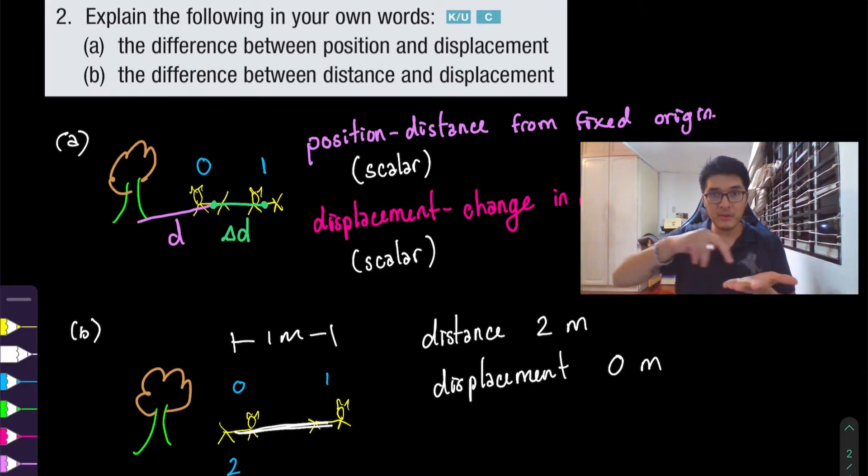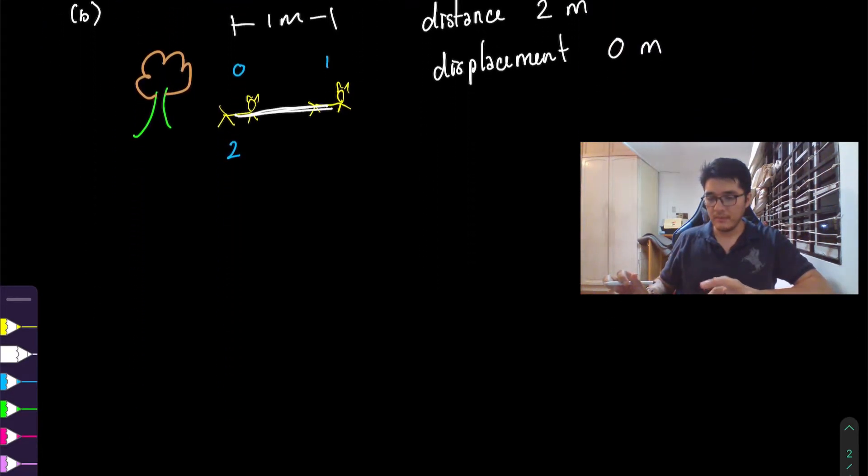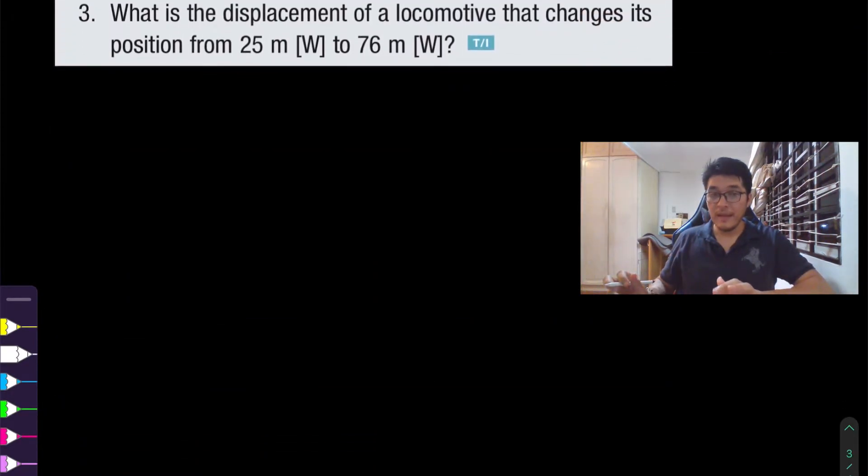This is one way you can distinguish between distance and displacement. Distance is the path that you actually traveled and you add up the length covered. Displacement looks at your change in position—from your starting point to the final point. If you have any questions for my explanations please leave a comment and I'll be sure to get back to you.